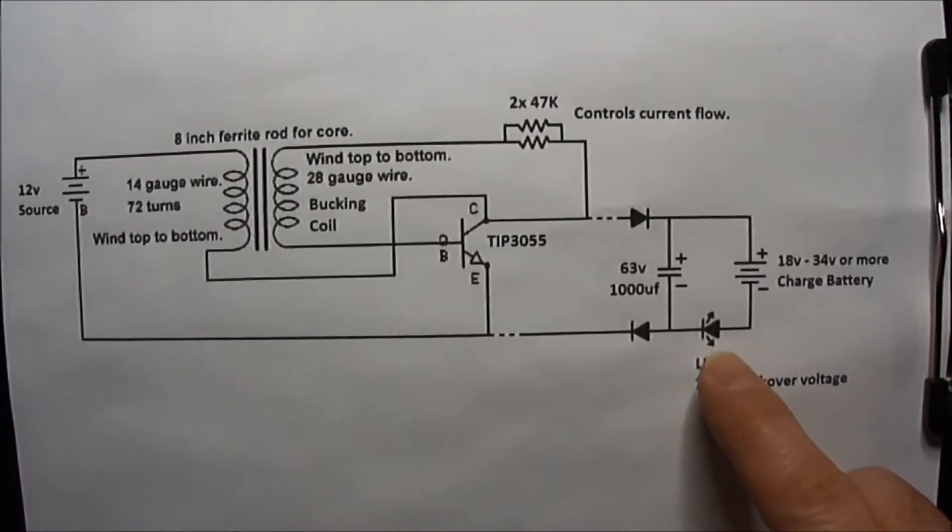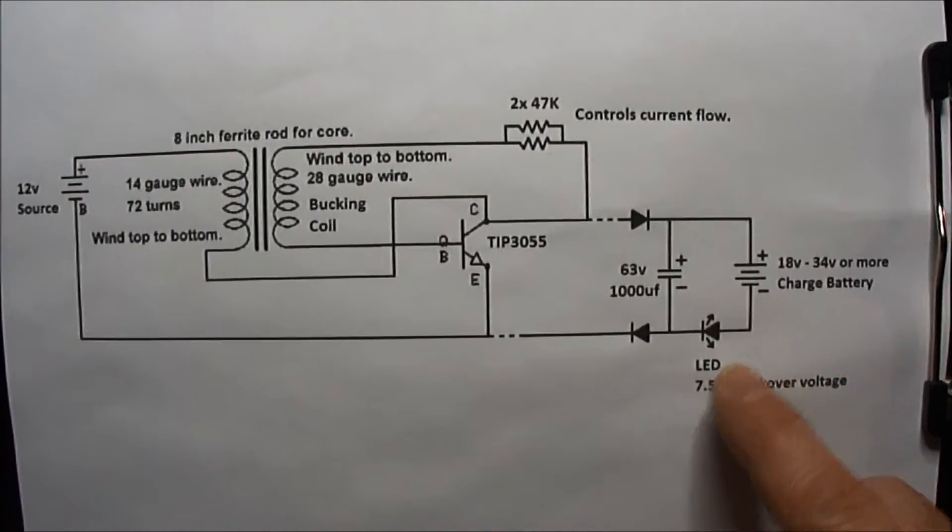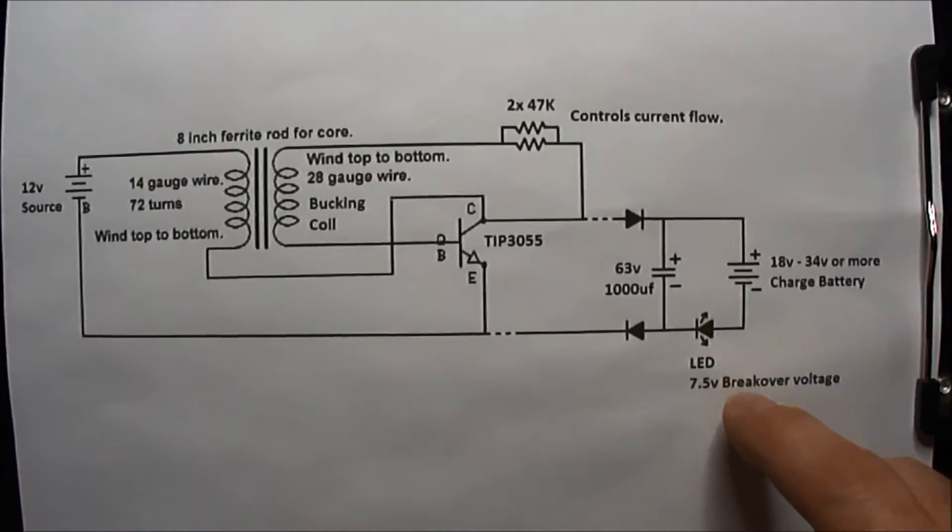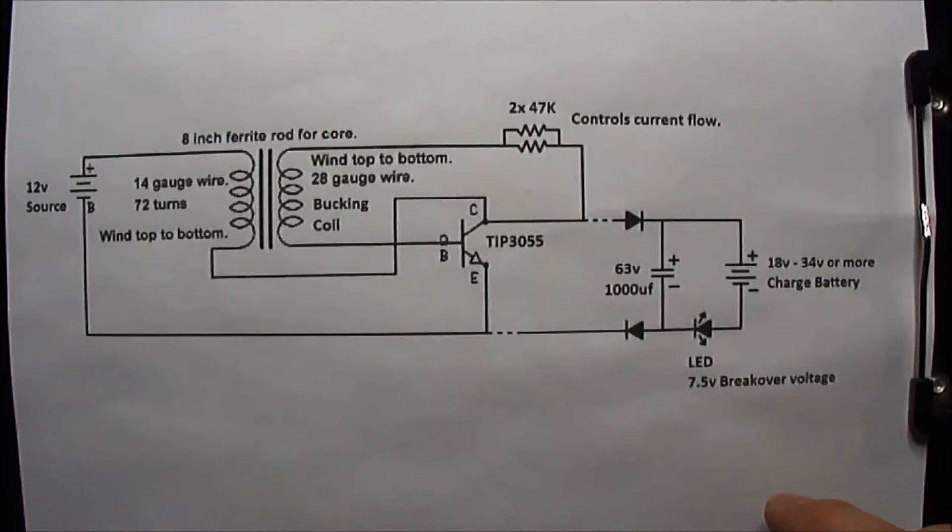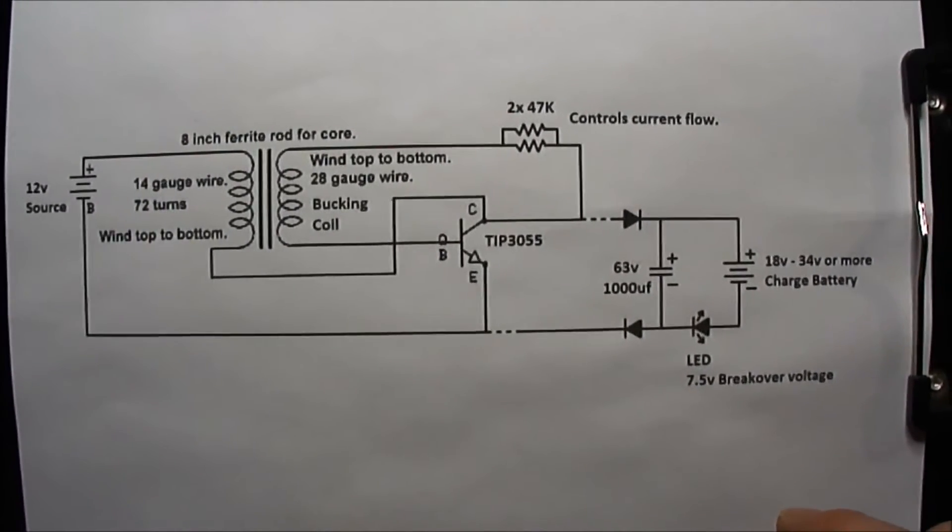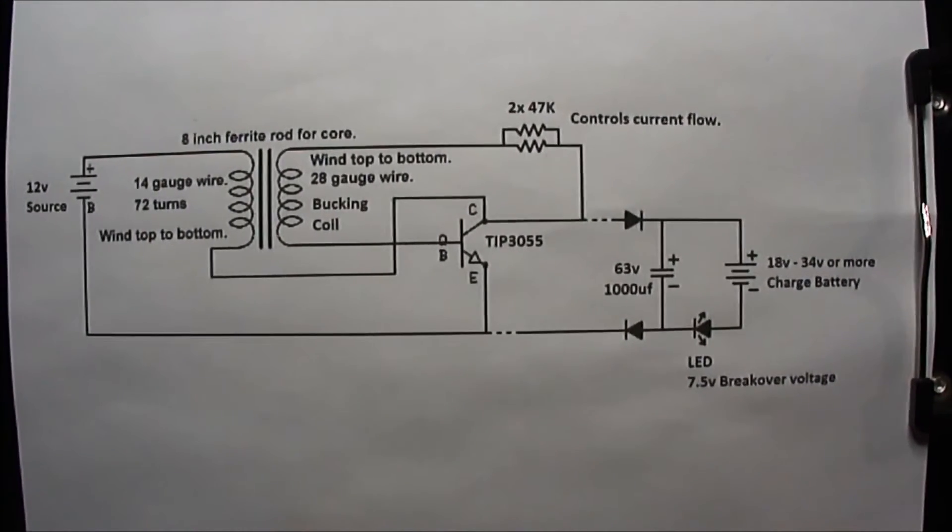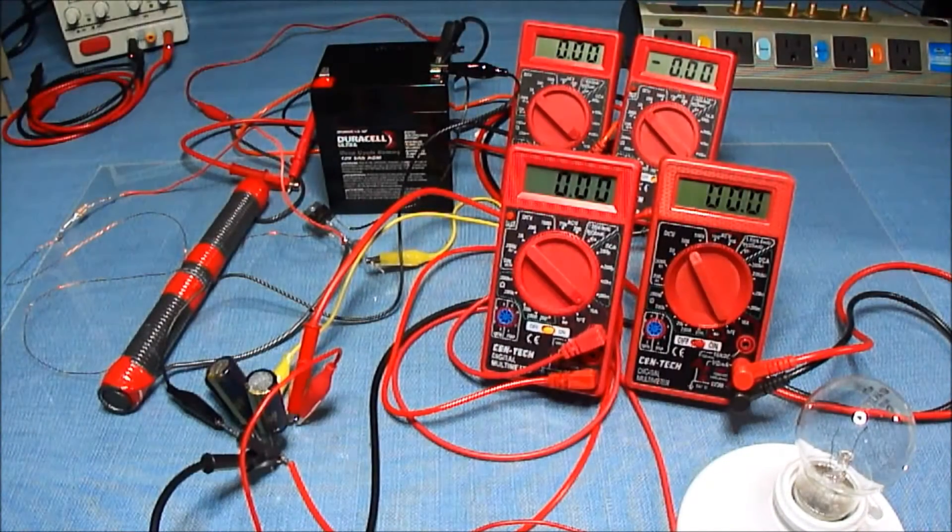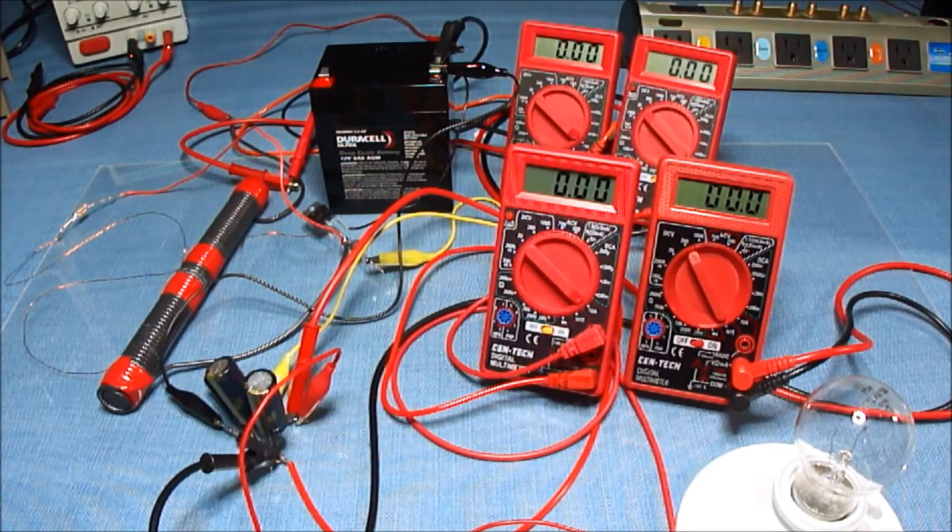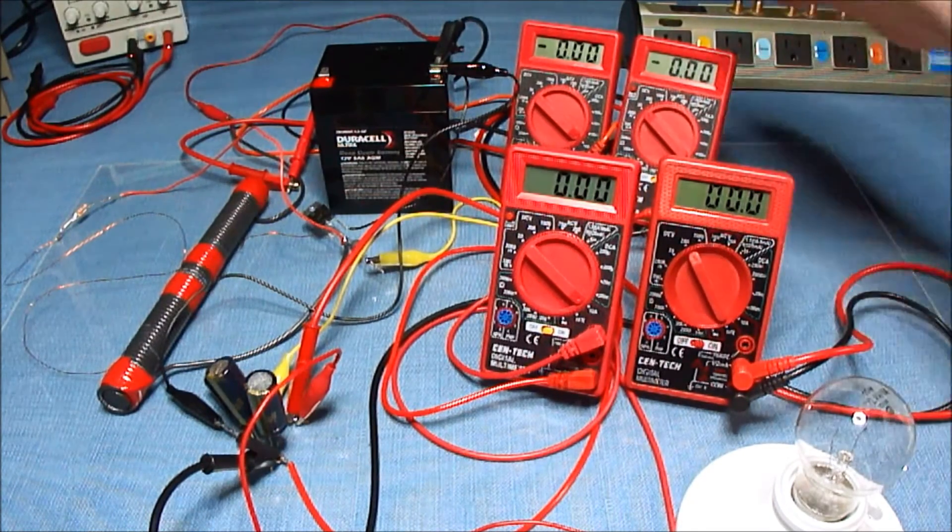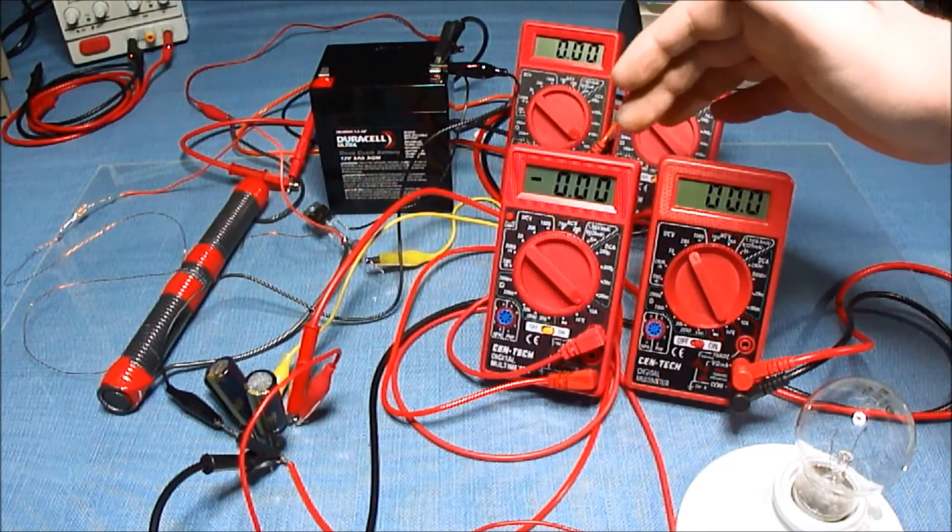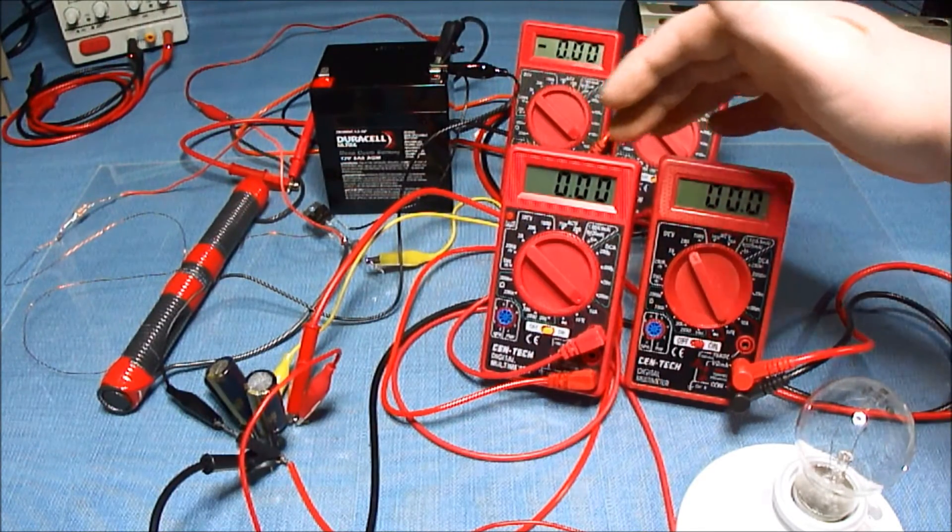Right now I got an incandescent bulb, 120 volt 15 watt over here. I removed the LED and the battery, and I'm also going to try it with a 120 volt 4 watt LED. This is the power in amps and volts, and power out to the light bulb. Got the amps and volts.